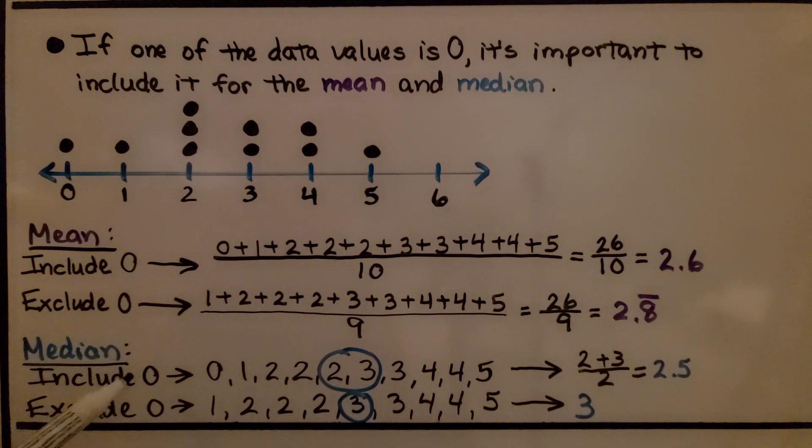For the median, if we include the zero, we get the two middle numbers of two and three, which, when we find the average, we get 2.5. If we exclude the zero, we have one less digit, and now the median is three.